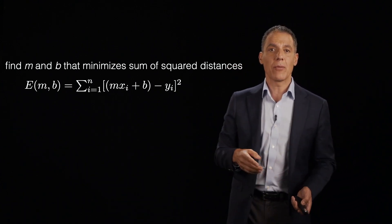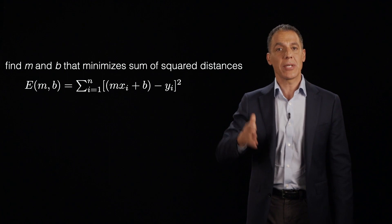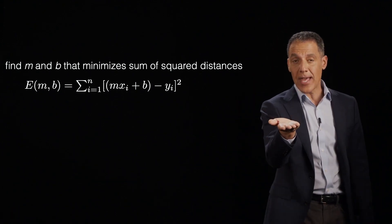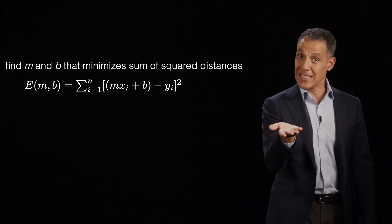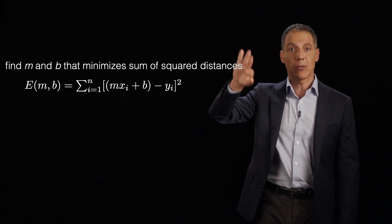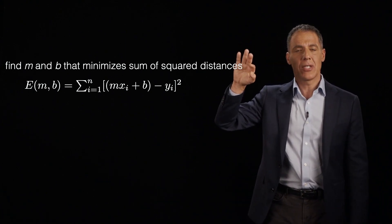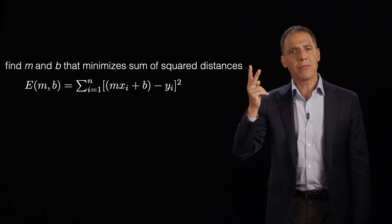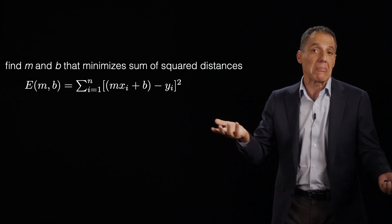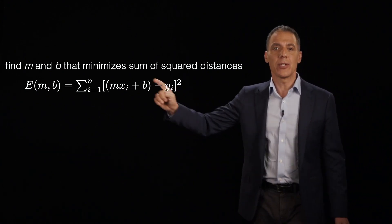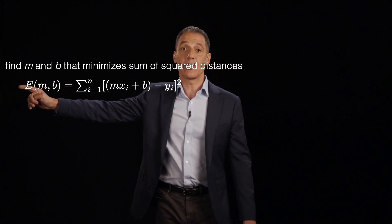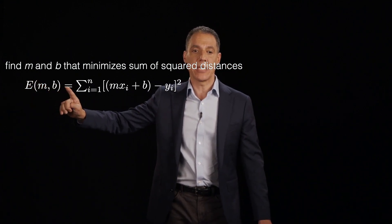The reason that was important is that because it was a parabola, I could take the derivative of that error function, and where that derivative is zero is the minimum. Well, we now have two parameters, so it can't be a parabola — but let's see what it is. Here is the quadratic error function in two unknowns, m and b.